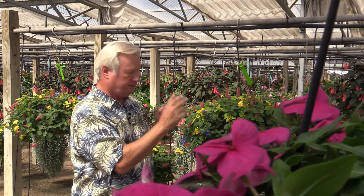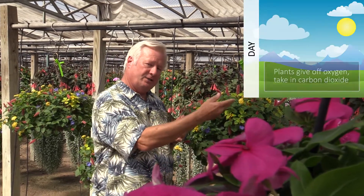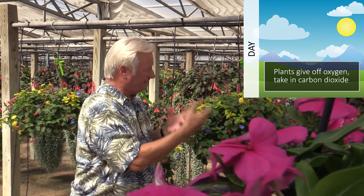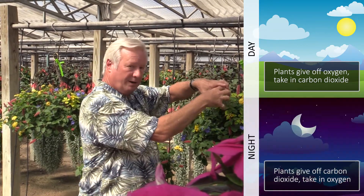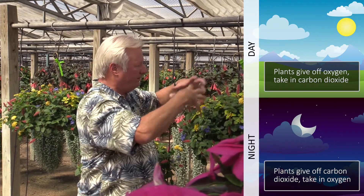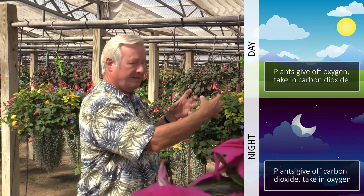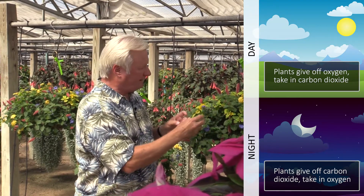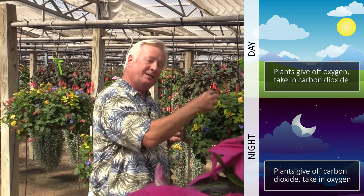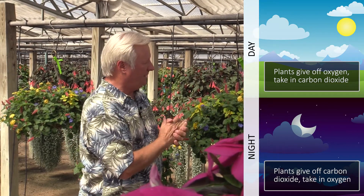Earlier I said that you were taught that plants give off oxygen and take in carbon dioxide, and I told you that's only half true. It is half true. At night the opposite happens. At night plants close up shop, close the stomates, and they put together all of the photosynthates — the chemicals they made that day. During the nighttime plants take in oxygen and give off carbon dioxide just like you do. So the notion that they give off oxygen all day is true for the day but it's not true at night.